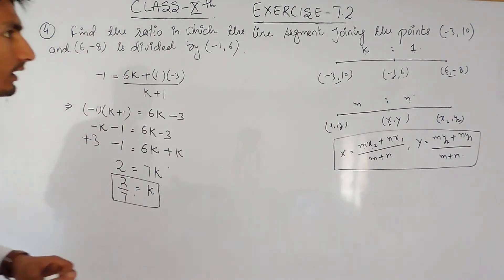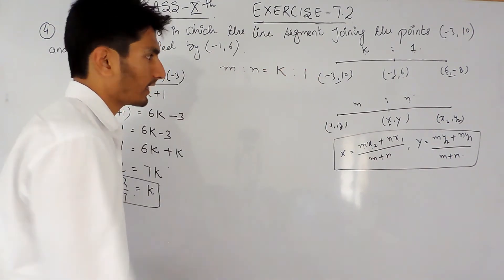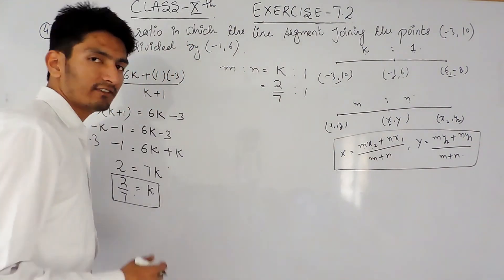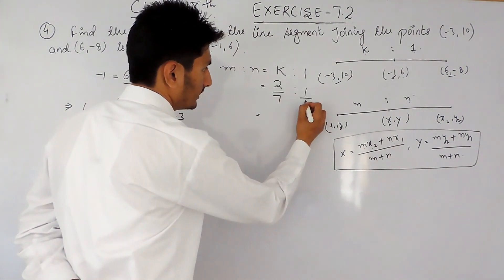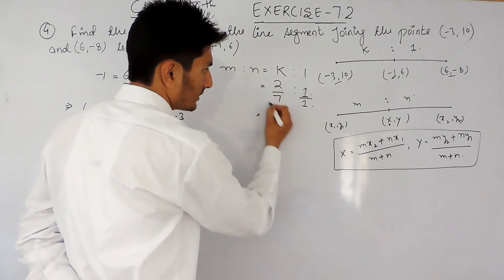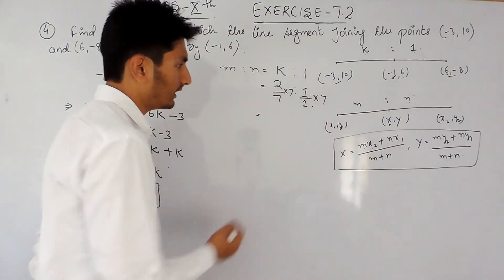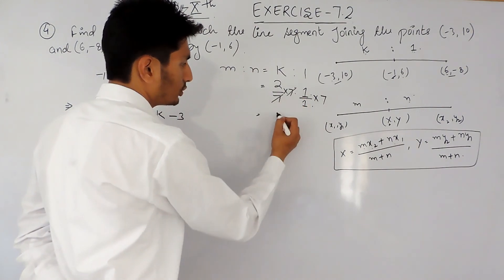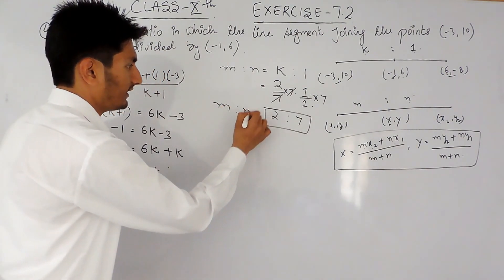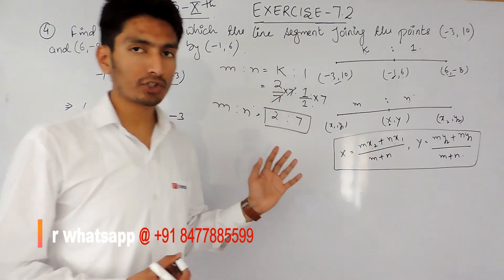We supposed the ratio m:n = k:1, and the value of k is 2/7. So the ratio is 2/7 : 1. Whenever there is a fraction in the ratio, take the LCM of the denominators and multiply both terms by it. The LCM of 7 and 1 is 7, so multiplying both sides by 7 gives the ratio as 2:7. Therefore, the ratio m:n is 2:7.